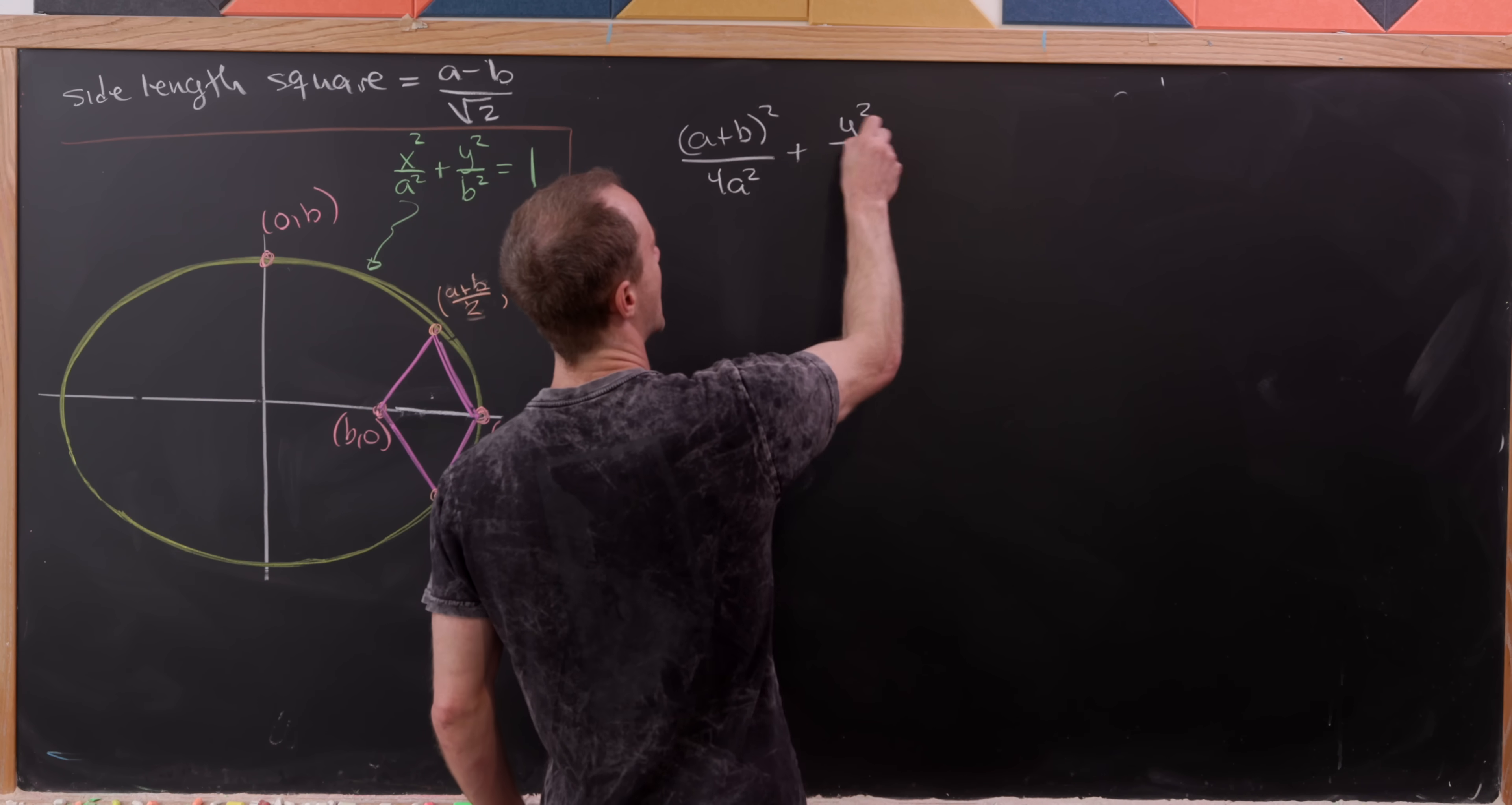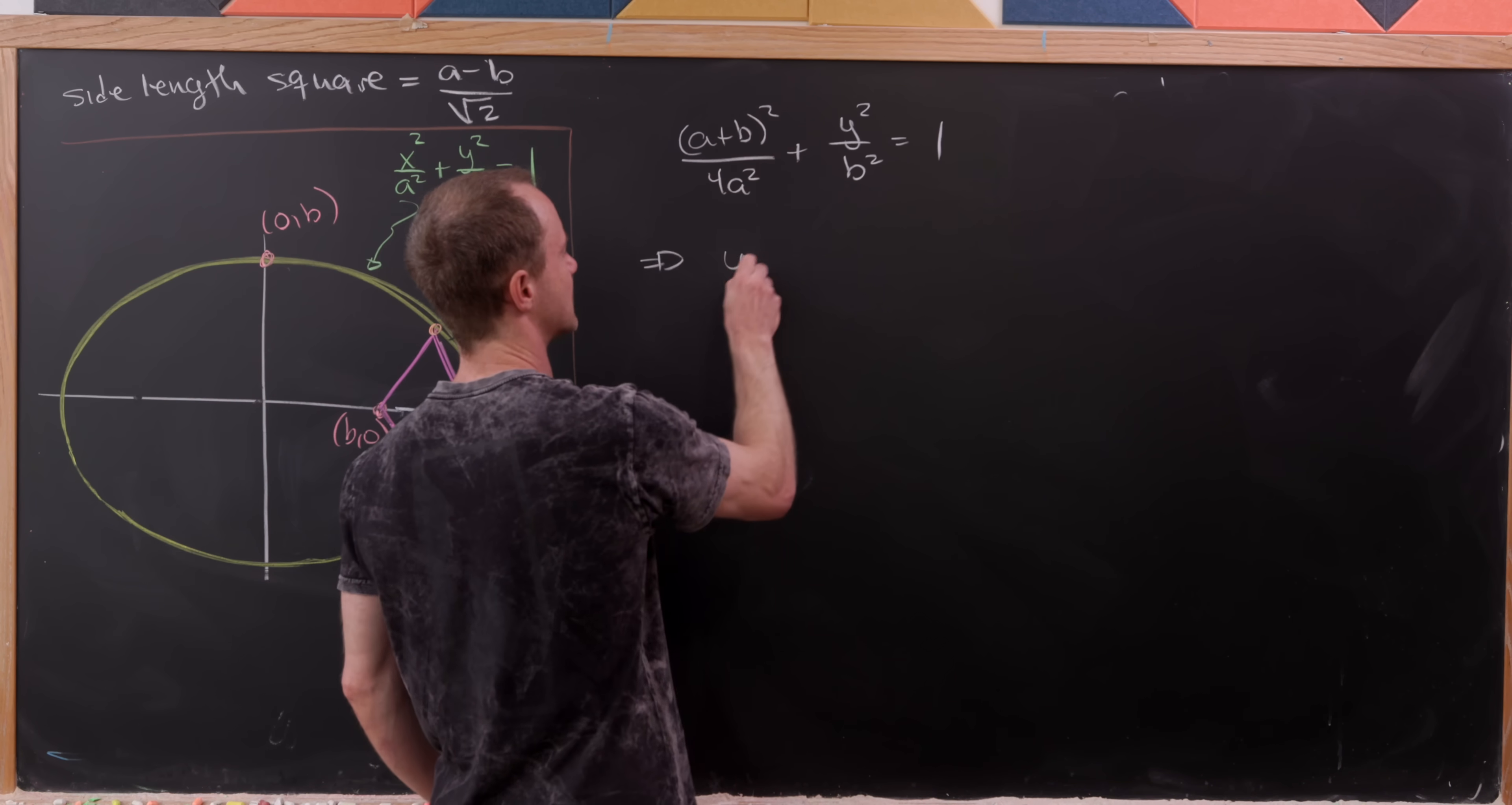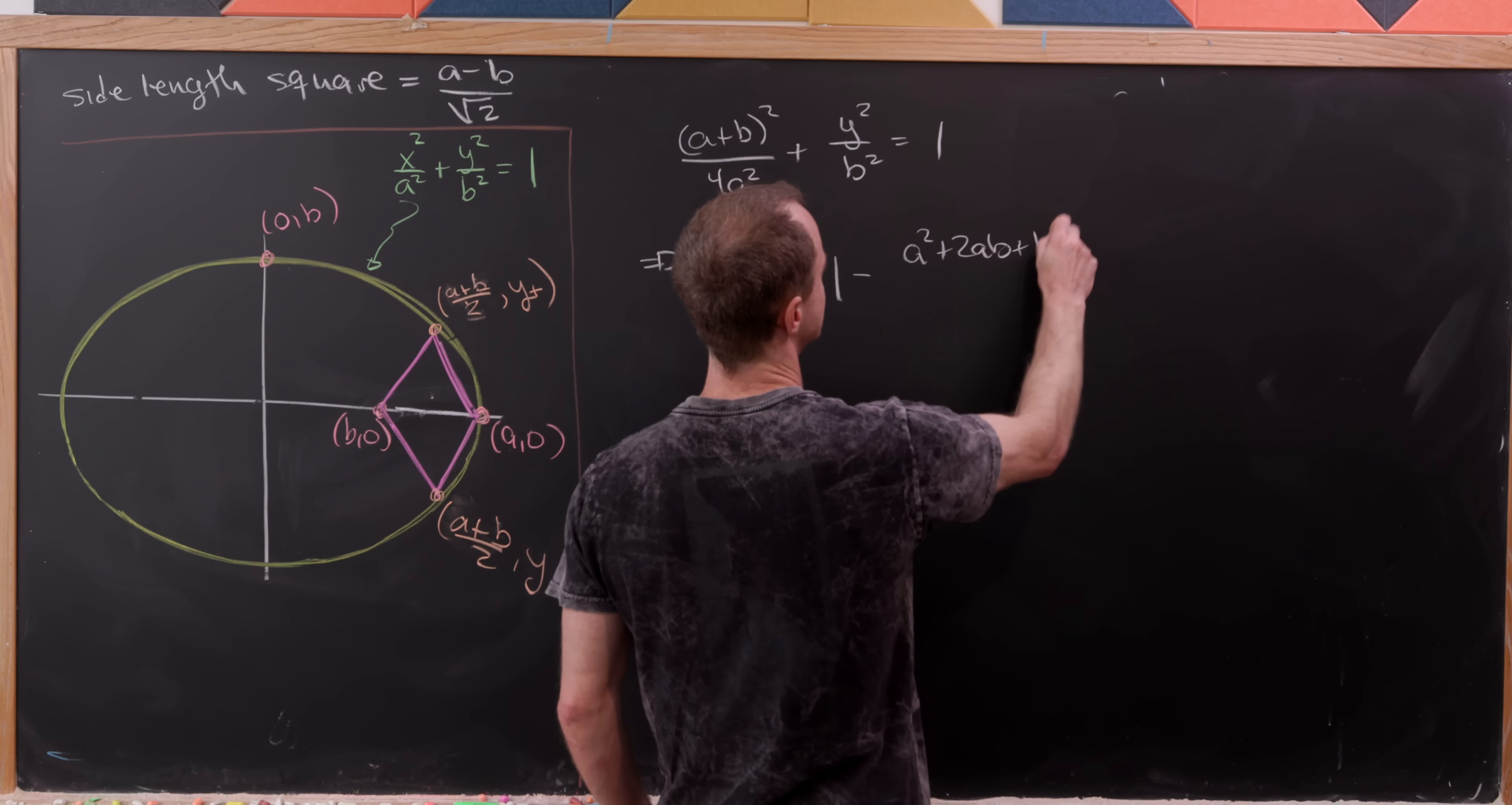But now here we can solve for y pretty easily. Let's observe that we'll get y²/b² = 1 minus (a² + 2ab + b²)/(4a²).